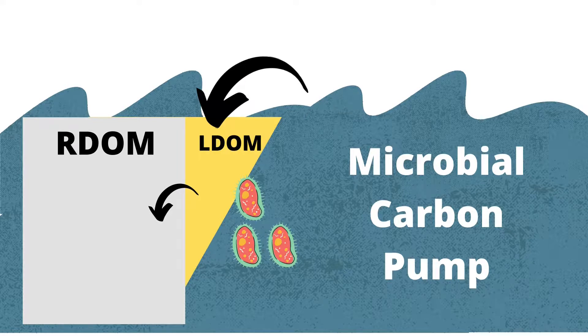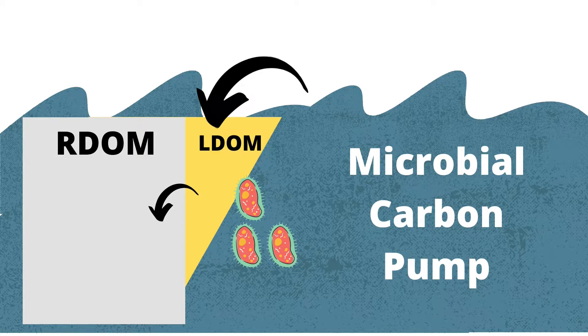What is left are the sub-products of bacteria remineralization, known as refractory DOM or RDOM. RDOM remains stored in the oceans for hundreds to thousands of years. This process is known as the microbial carbon pump.